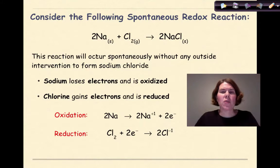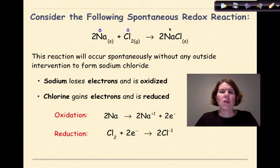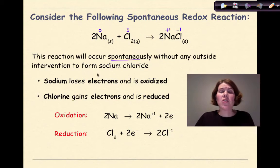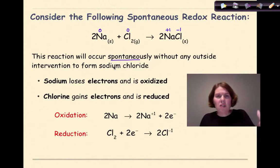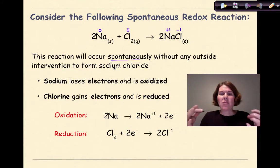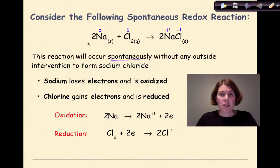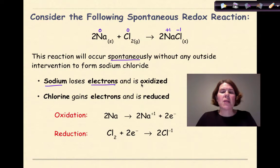Let's look at the following spontaneous redox reaction: solid sodium plus chlorine gas gives sodium chloride, nice and balanced. If I assign oxidation numbers, sodium would be zero, diatomic chlorine would be zero, sodium as part of a compound would be plus one, and chlorine would be minus one. This reaction is going to occur spontaneously without any outside intervention to form sodium chloride. If I take a chunk of sodium and throw it into a vat of chlorine gas, those two substances are going to react together spontaneously to make sodium chloride. Sodium is going to lose electrons and be oxidized — Na is going from zero to plus one, more positive.